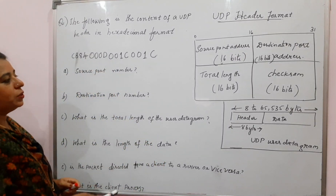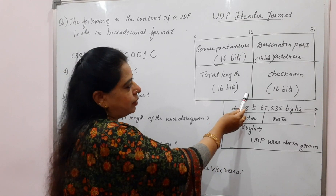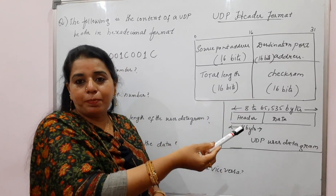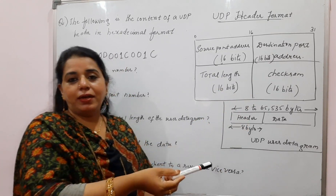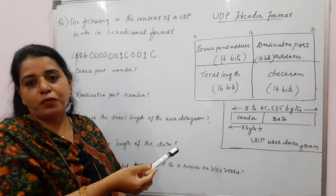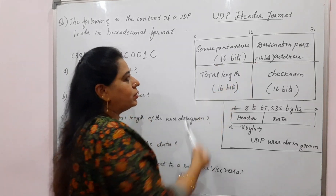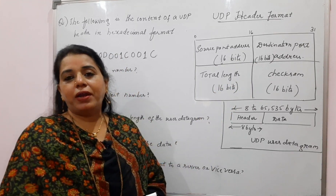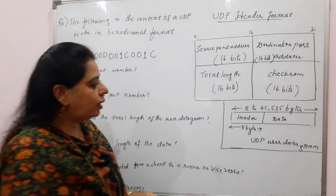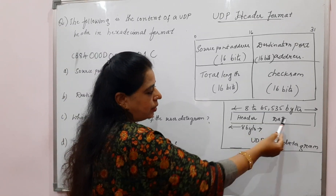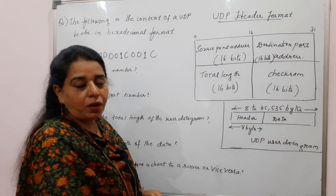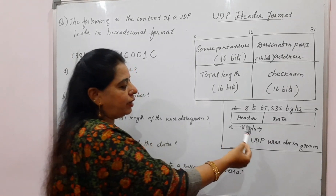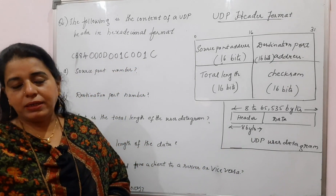The question states that — for your reference, I have written the header format for UDP. There are four fields. This is a simple protocol with a very simple header format. The four fields are: source port address, destination port address, total length, and checksum. Each of these fields has 16 bits. The packet format for UDP — which we normally call the user datagram — has a header of 8 bytes, with the remaining portion being the data.